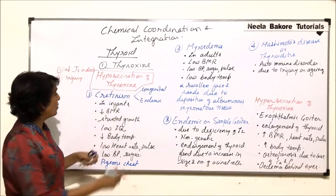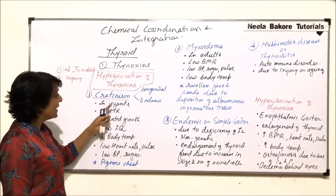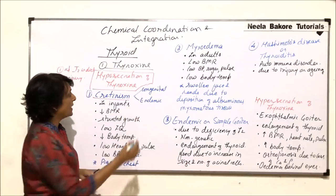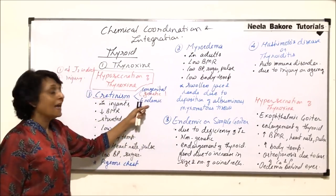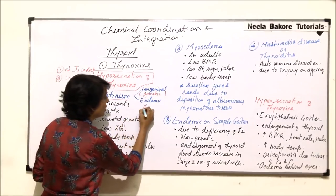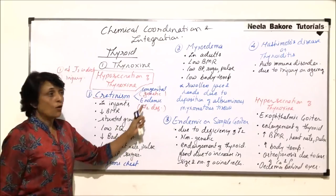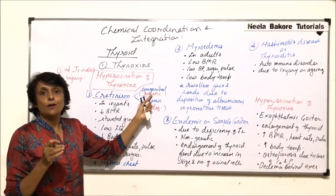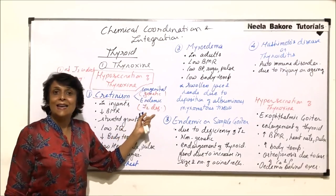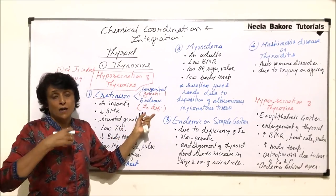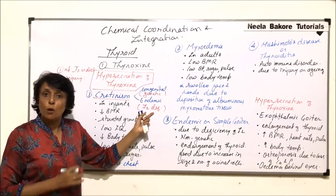The first disorder we are talking of is cretinism. It could be congenital, that means due to a genetic defect, and endemic, that means due to iodine deficiency. If there is a genetic disorder, then thyroid absorption will not be proper because of the gene defect. And endemic means that in our water or iodized salt, iodine is not coming in proper quantity.